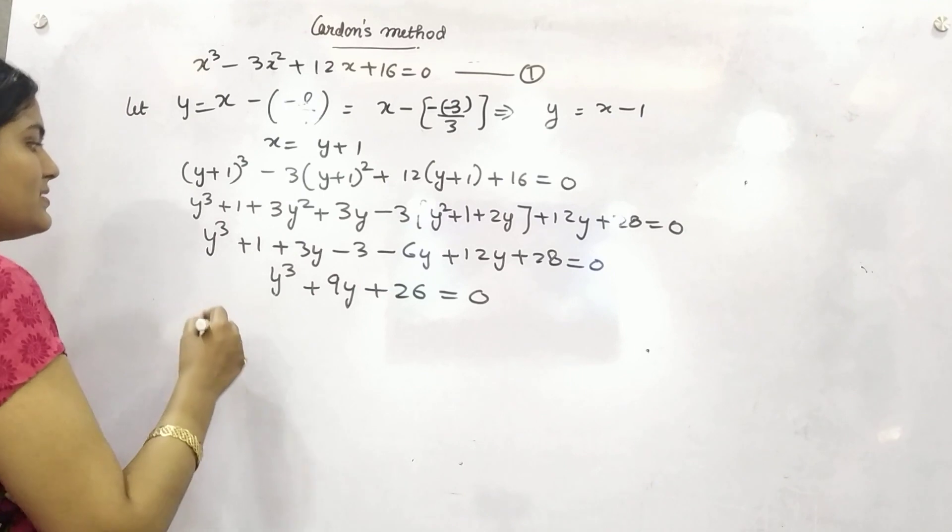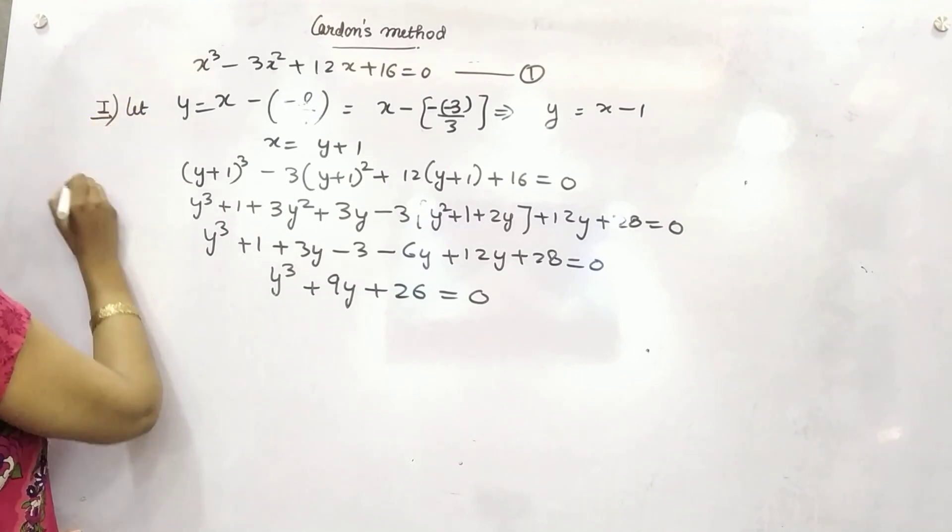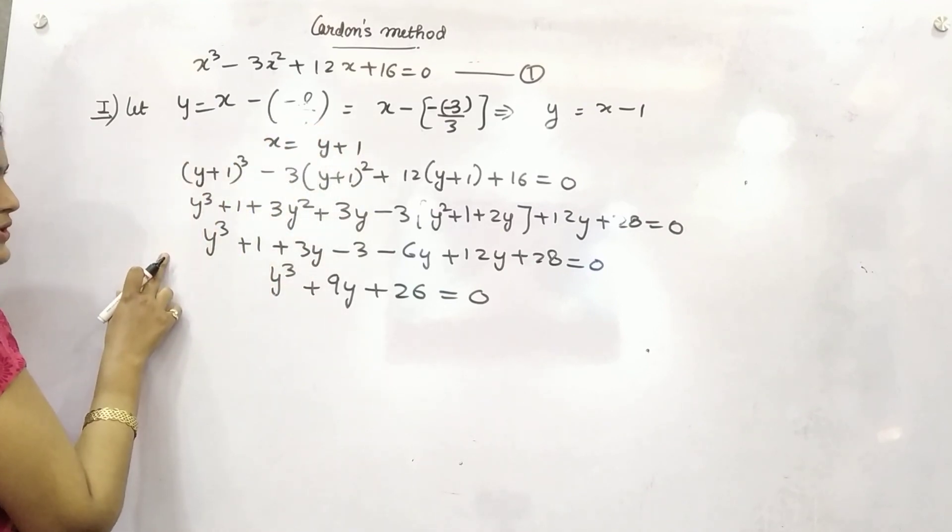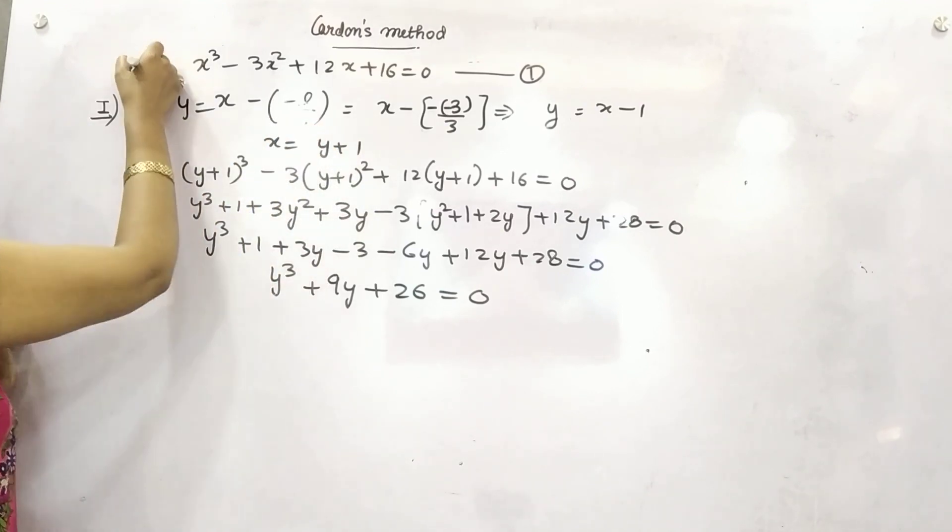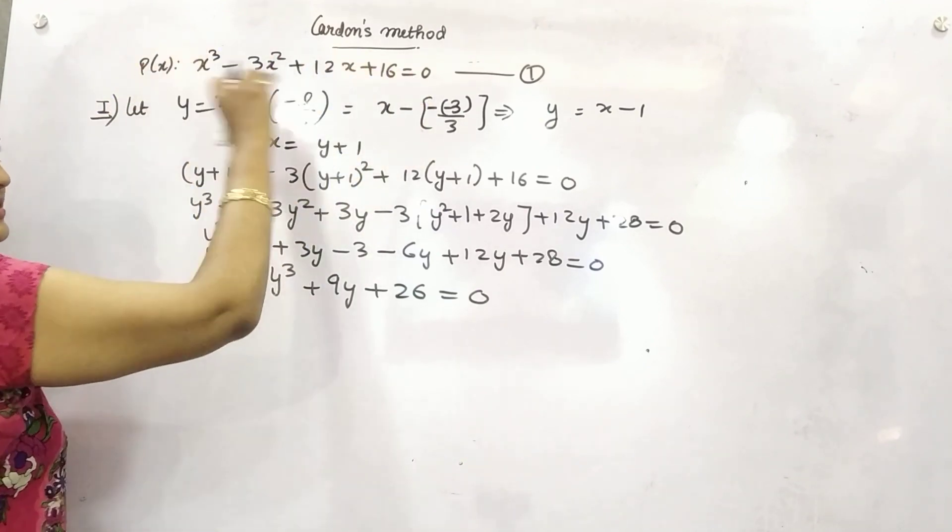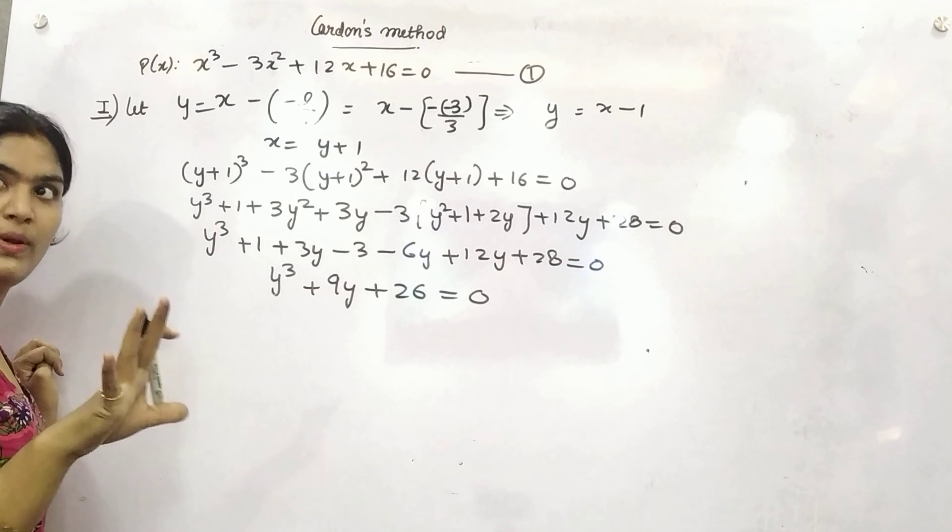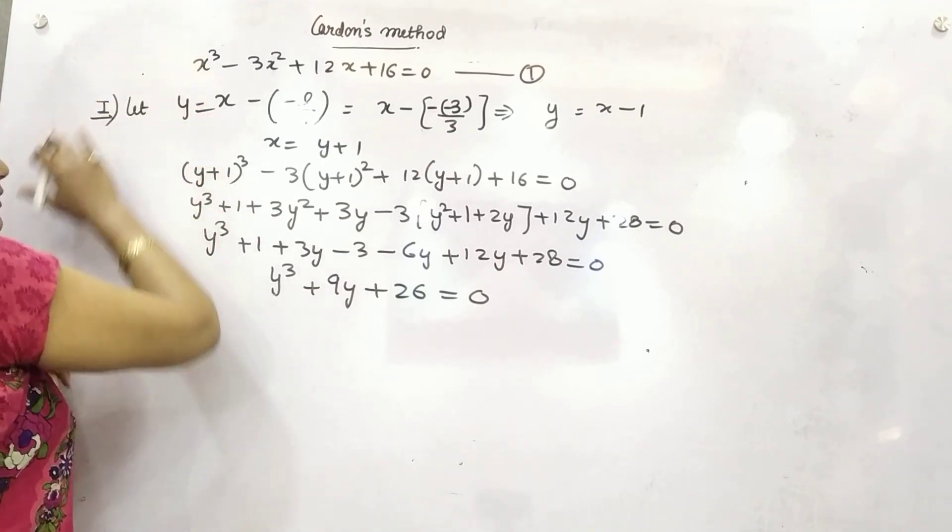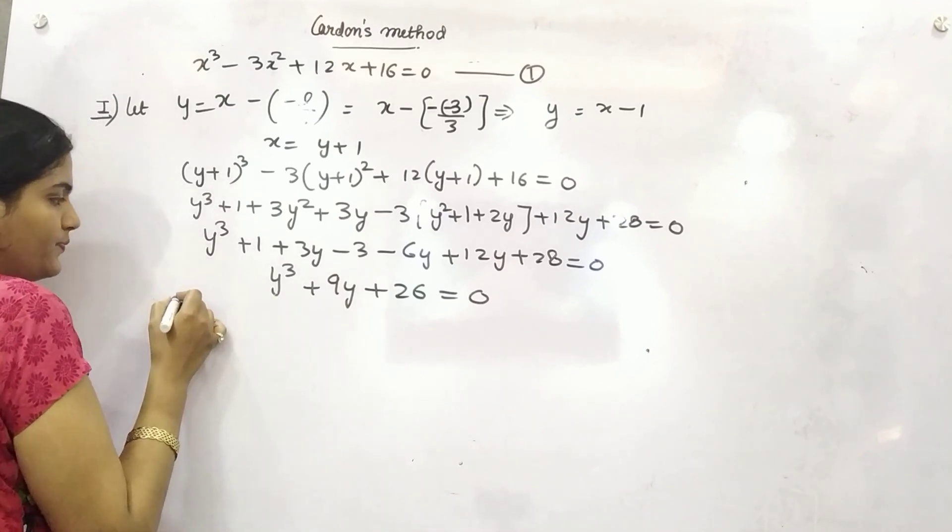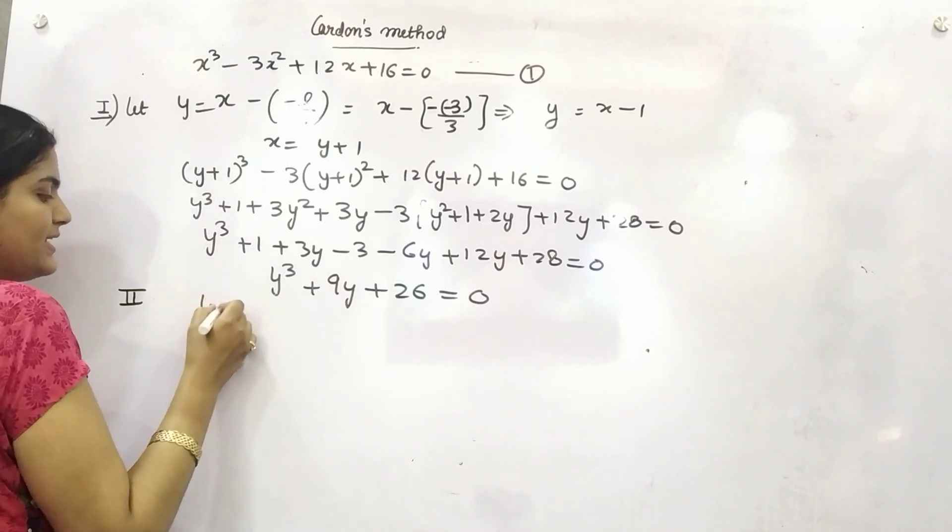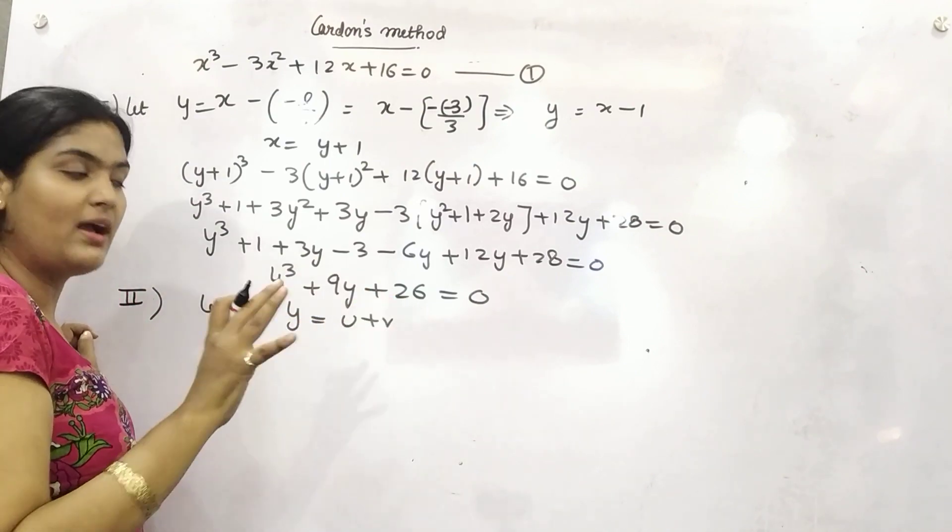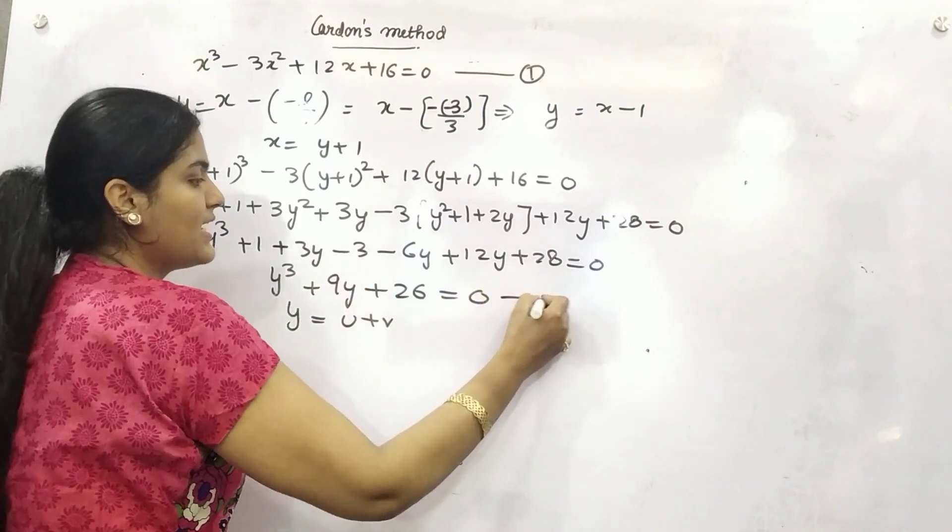Now your next step is, so your first step is to substitute this into the equation. Thereafter, this is now polynomial equation, not only polynomial. But this is p of y plus 1. Now, what you need to do? So next step is, let y is equals to u plus v. I am cubing both sides and compare. So this is your second equation.